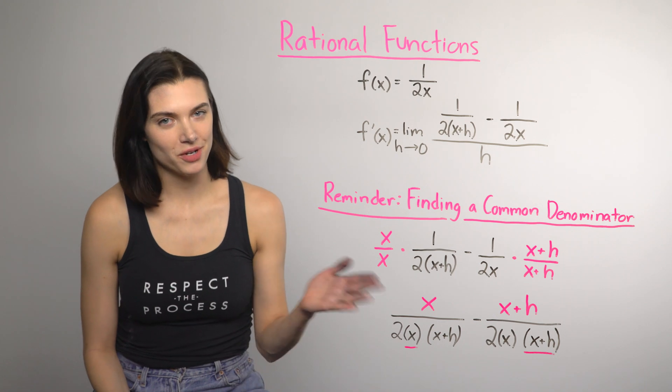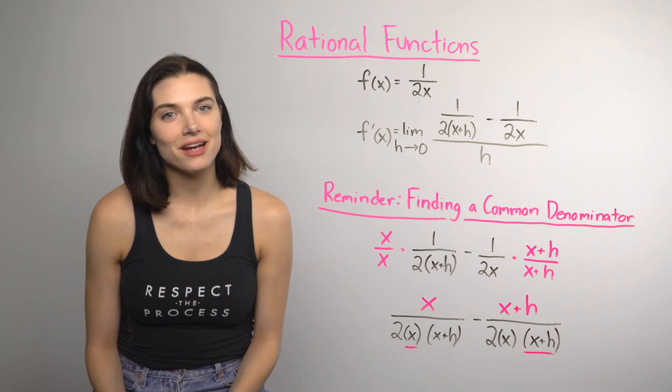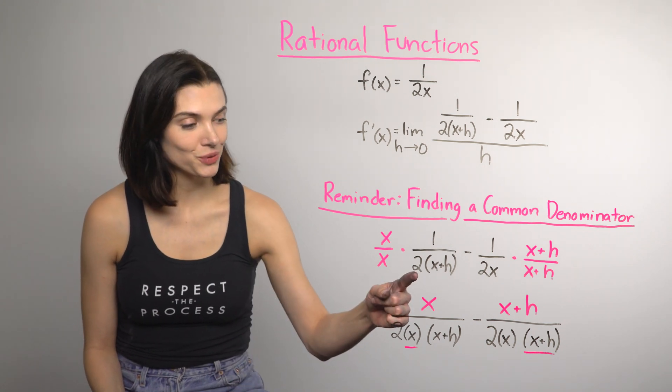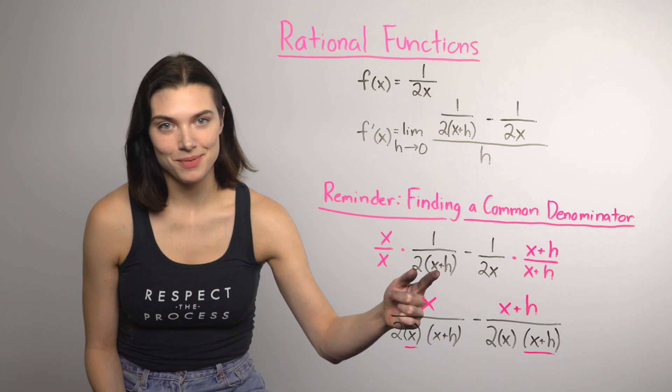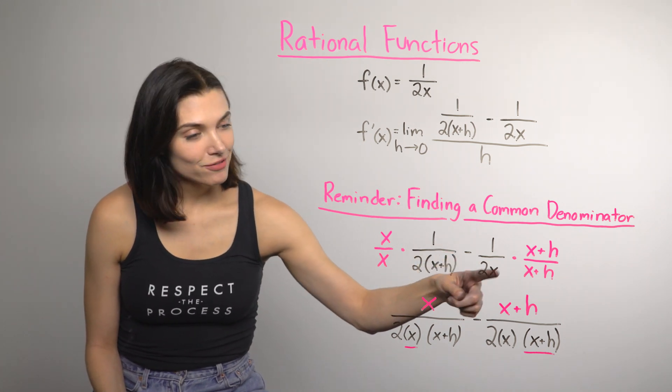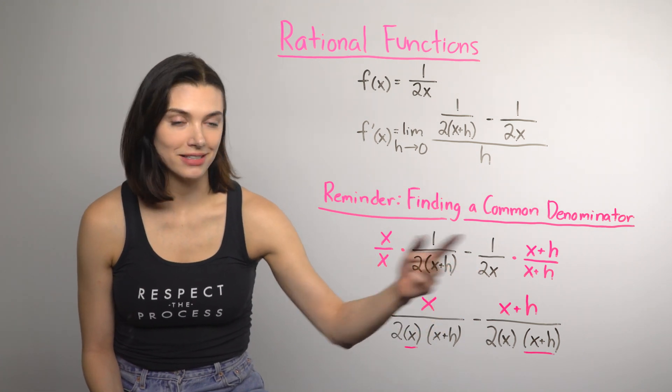So, you can see it, this is just a quick reminder about how to find the common denominator. The common denominator needs all the unique pieces of both denominators, including the 2, the x, and the x plus h. The first fraction is missing the x, and the second fraction is missing the x plus h. So, multiply the whole fraction by the part that it's missing.